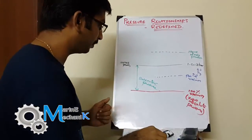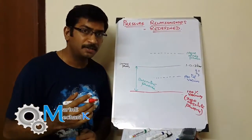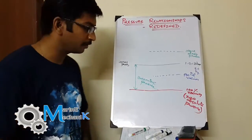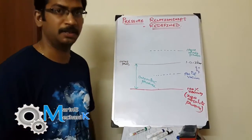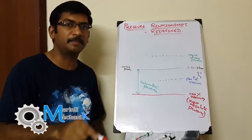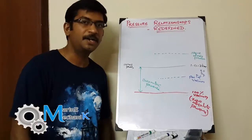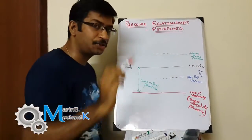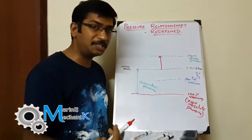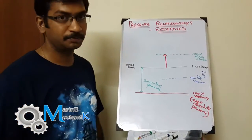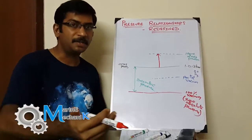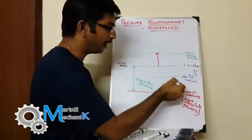Gauge pressure is simply what is shown on a gauge. But what does the gauge show? It cannot show zero absolute pressure, and it also cannot show atmospheric pressure directly, because the Bourdon tube inside the gauge is manufactured under atmospheric pressure. Therefore, the gauge can only read pressure above the atmosphere. However, some gauges are designed to read negative pressures — that is, the partial vacuum zone.